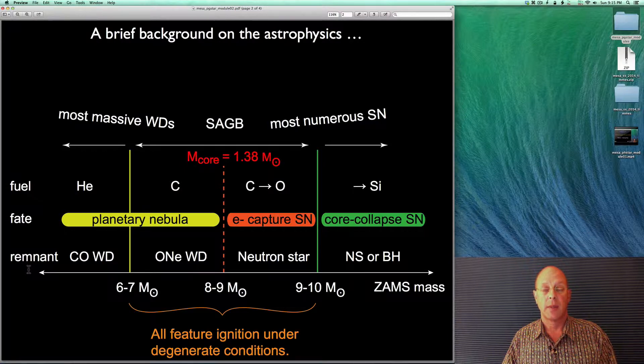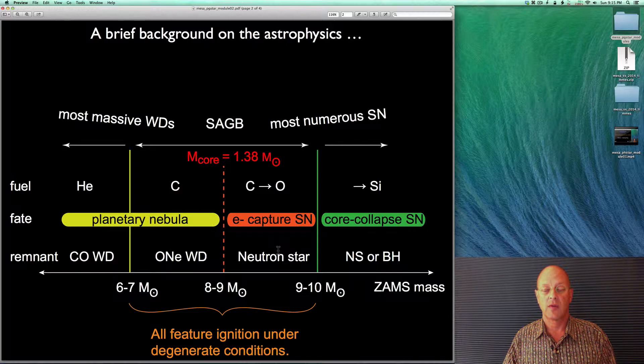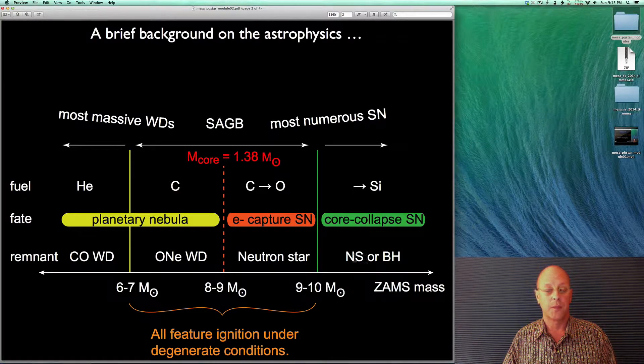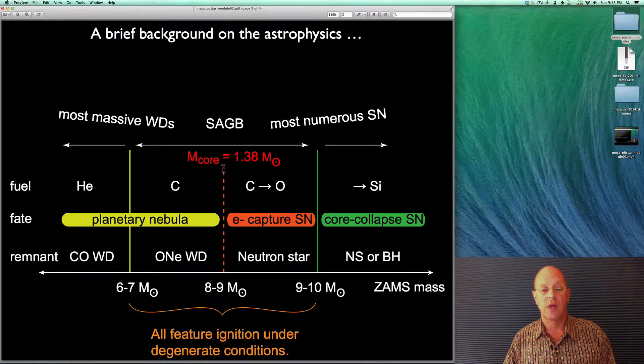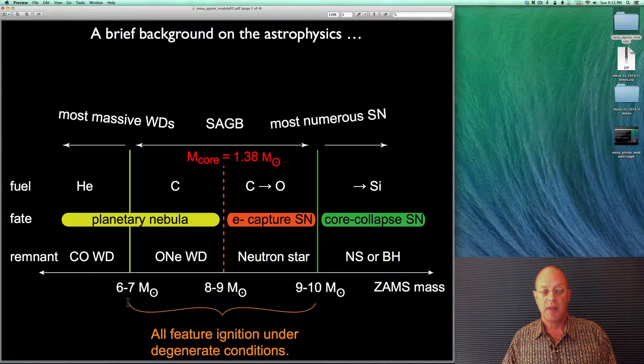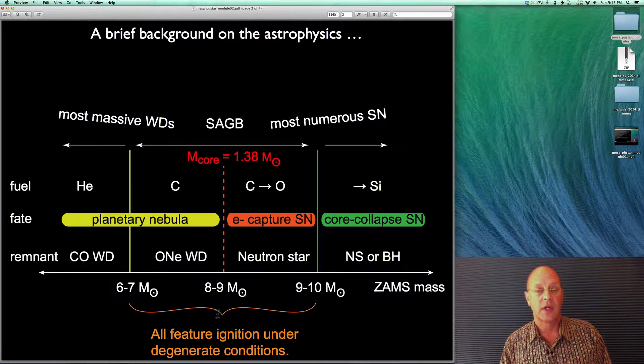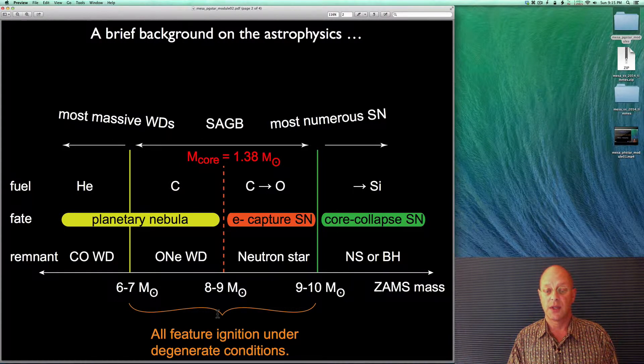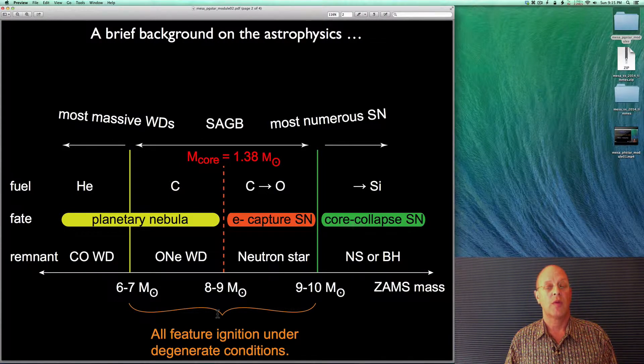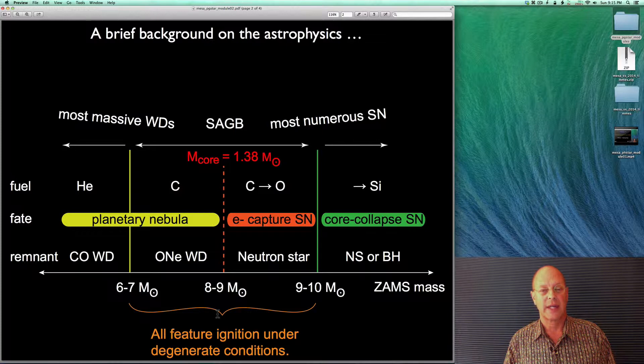And as a result, they have different remnants, whether it's a carbon-oxygen white dwarf remnant, an oxygen-neon-magnesium white dwarf remnant, a neutron star, or a neutron star and a black hole. For demarcation, I mark here the Chandrasekhar mass of the carbon core of 1.38 solar masses. The common piece of physics that happens in this mass range, in this super-AGB range, is that they all feature ignition under degenerate conditions, electron degenerate conditions. That's sort of the global viewpoint. Let's zoom in a little bit on a generic example.